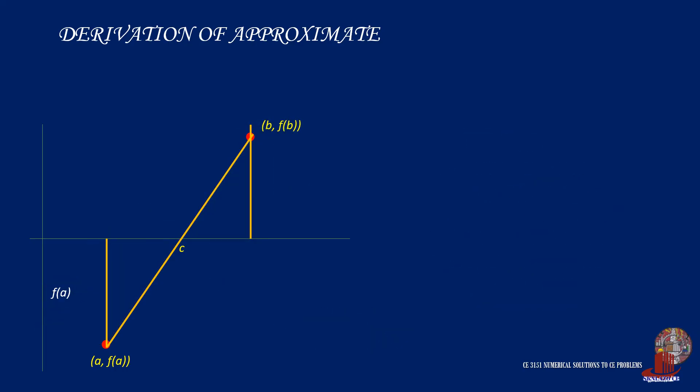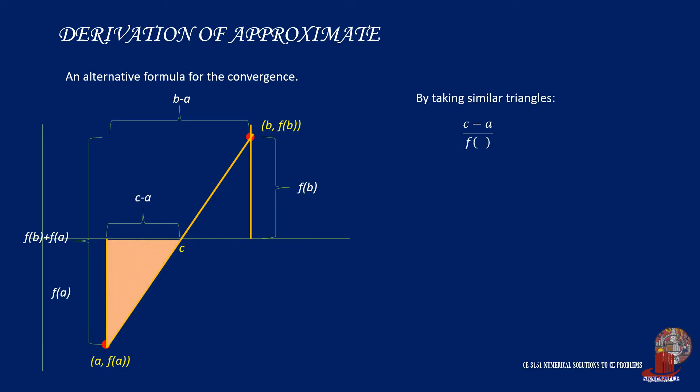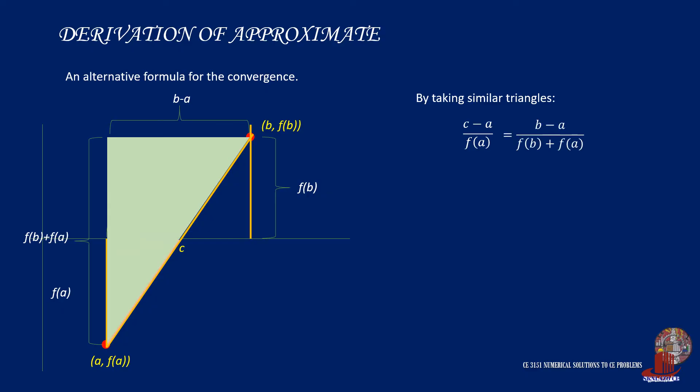An alternative formula that we can utilize in regula falsi method is instead of using two small triangles, we are going to compute with a bigger total triangle. Again, by taking similar triangles, the triangle that includes the lower limit can be drawn as (c - a) all over the function of a. This is going to be equated with the bigger triangle having the dimensions as shown, so the expression becomes (b - a) all over the functions of a and b.